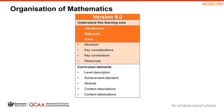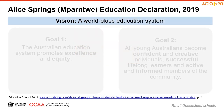We will begin by focusing on the intent of the learning area. To do this, we'll explore the introduction, rationale and aims. Together, these capture why we teach mathematics and reflect the vision and goals for education in Australia. It's important to consider the relationship of the rationale and aims to the goals of education in Australia, as expressed in the Alice Springs Muwurrtirri Education Declaration 2019.